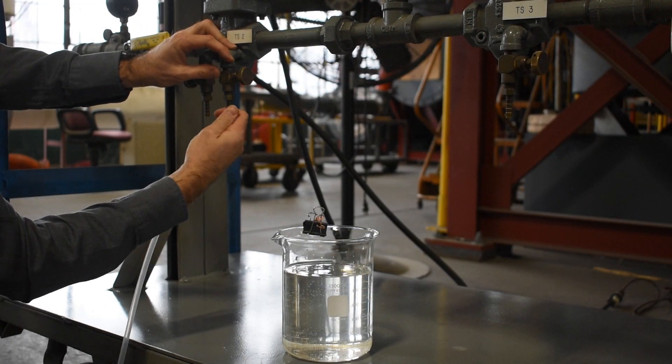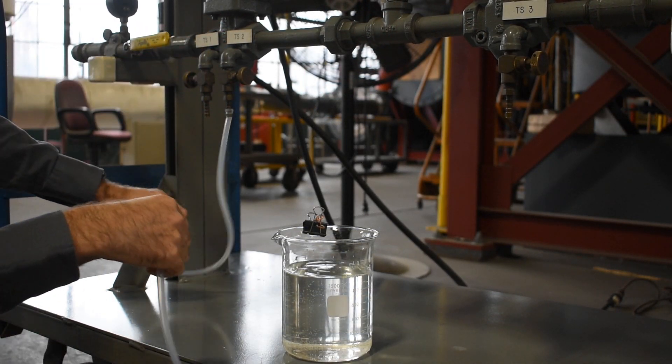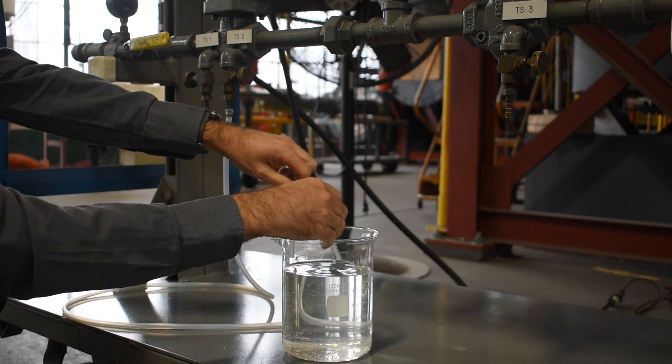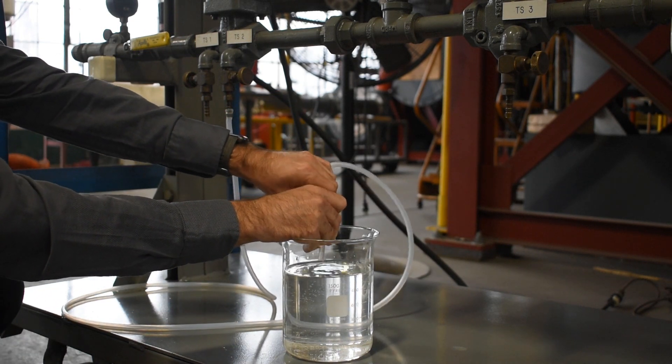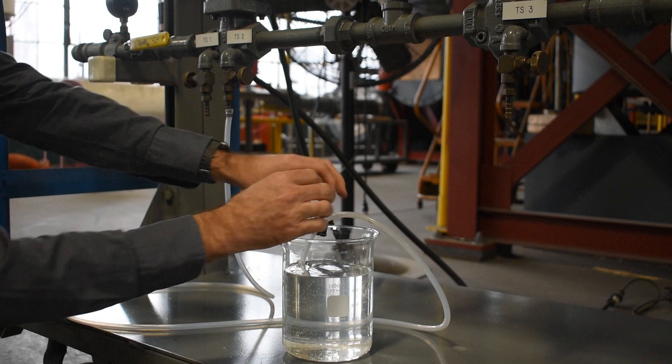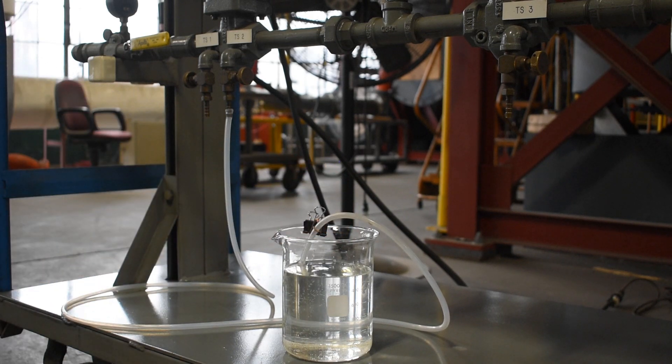One end of the tube is connected to a barbed test point downstream of the valve being tested. The other end of the tubing is placed just below the surface of the water. This end should be approximately one quarter inch below the surface.